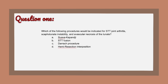Question 1: The correct answer is B — the STT fusion. All three of the other procedures — Suave-Kapandji, the Darrach procedure, and the hemi-resection interposition — are indicated for DRUJ arthritis. Suave-Kapandji is where they fuse the DRUJ. Darrach is the resection of the distal ulna. The hemi-resection interposition is resection of only the articulating portion of the ulna, interposing soft tissues to prevent radial-ulnar impingement.